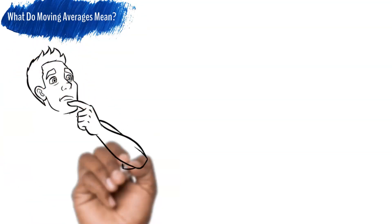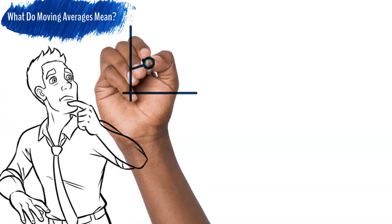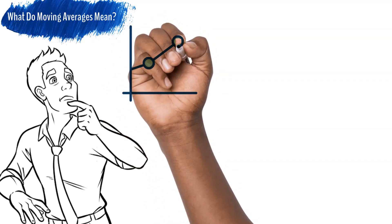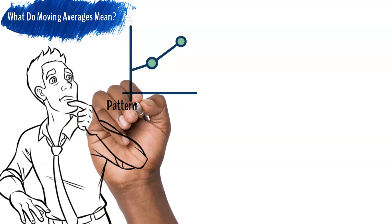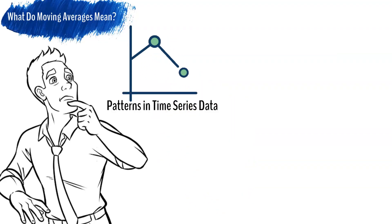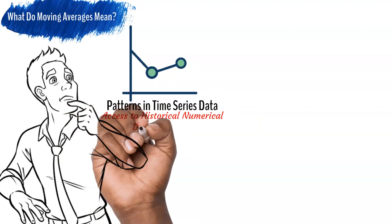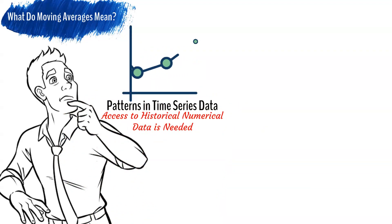So, what are moving averages? Moving averages are a fundamental statistical technique used in forecasting to analyze and predict trends or patterns in time series data. By time series data, we refer to information collected and recorded over regular time intervals, such as hourly, daily, or monthly. Moving averages are particularly useful when there is access to archival or historical time series numerical data.